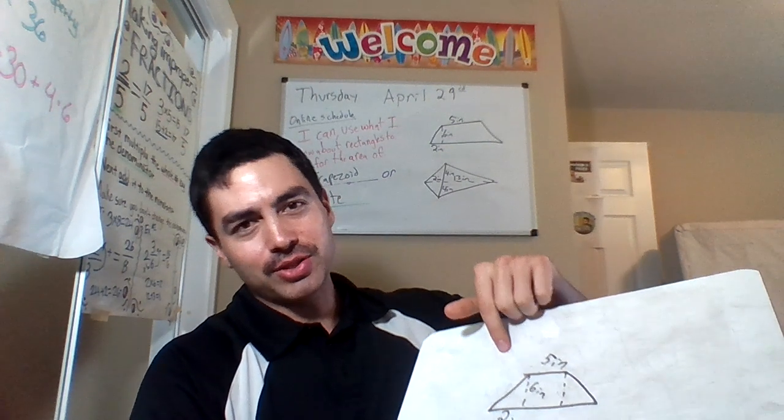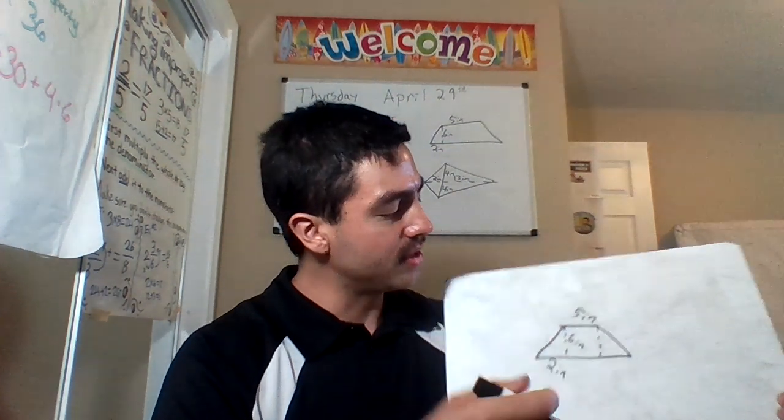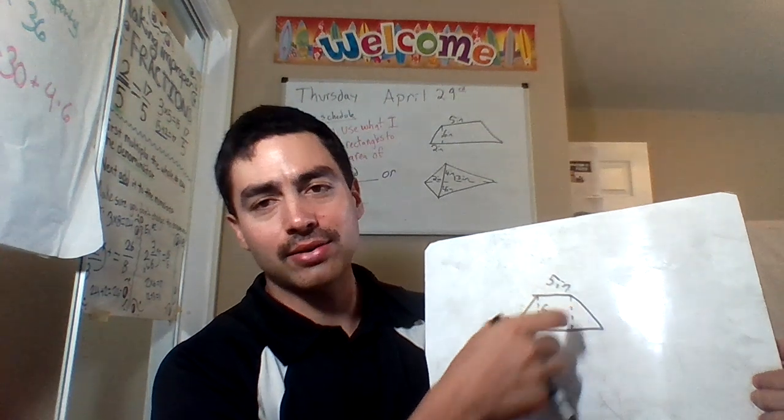So first off, we have a trapezoid. Trapezoid kind of looks like a Pizza Hut logo. It's also a rectangle with two triangles on the side.